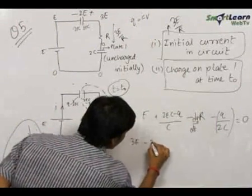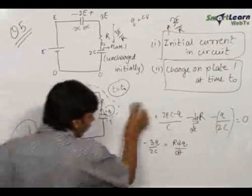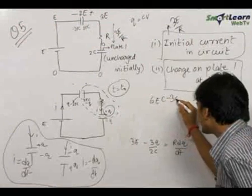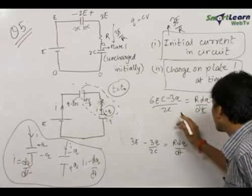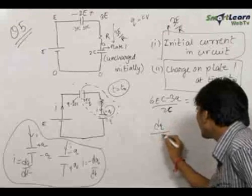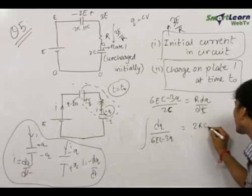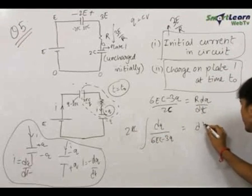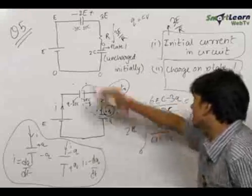On solving we get: 3E − 3q/2C = R · dq/dt. Rearranging: (6EC − 3q)/2C = R · dq/dt. This can be easily solved by separation of variables — we write dq/(6EC − 3q) = dt/2RC. Integrating the right side from 0 to t and the left side with the initial condition that the initial charge on this plate was zero.